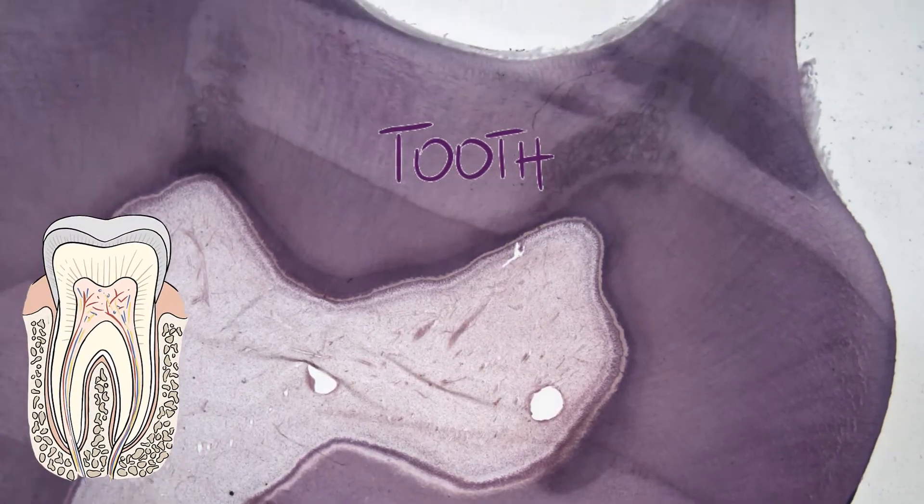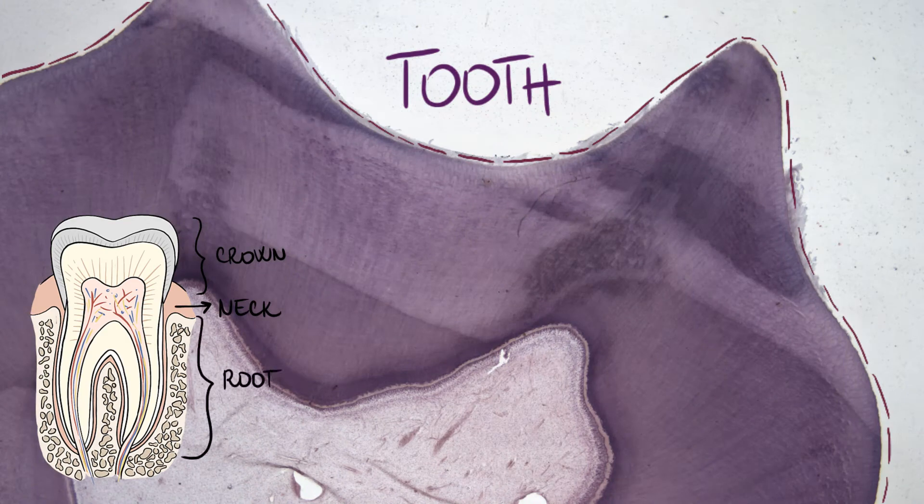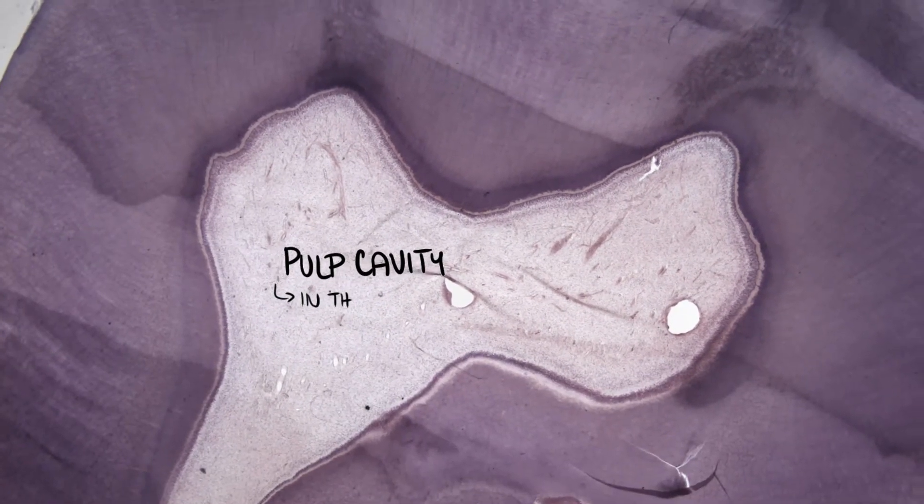A tooth consists of a crown, a neck, and a root. There is a pulp cavity in the center of the tooth.